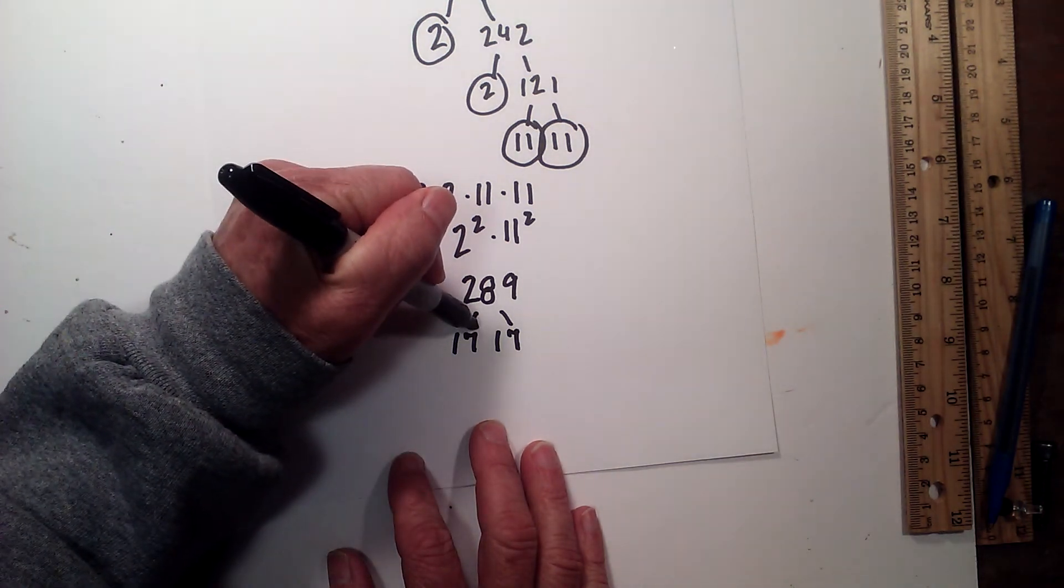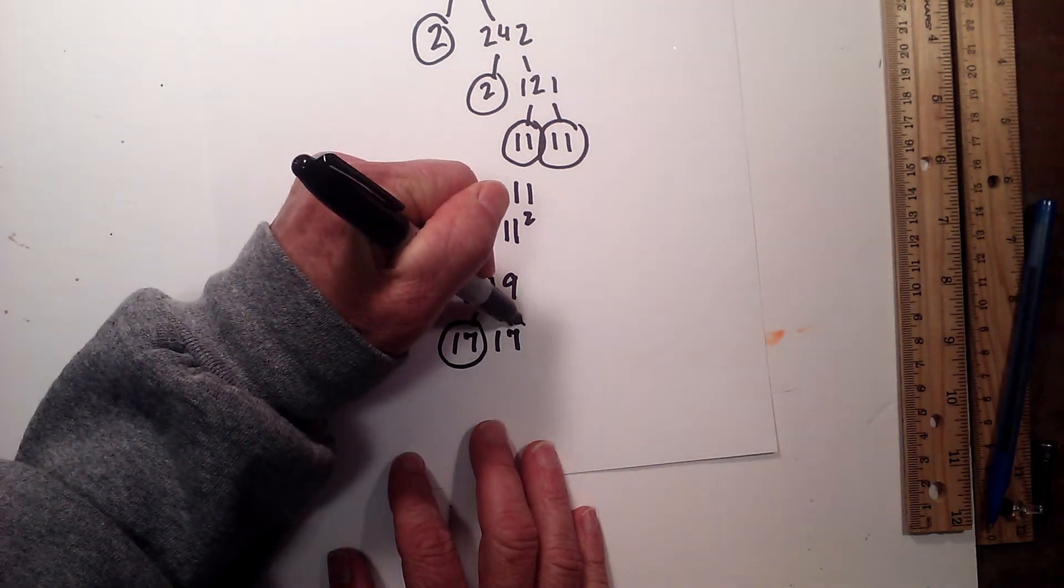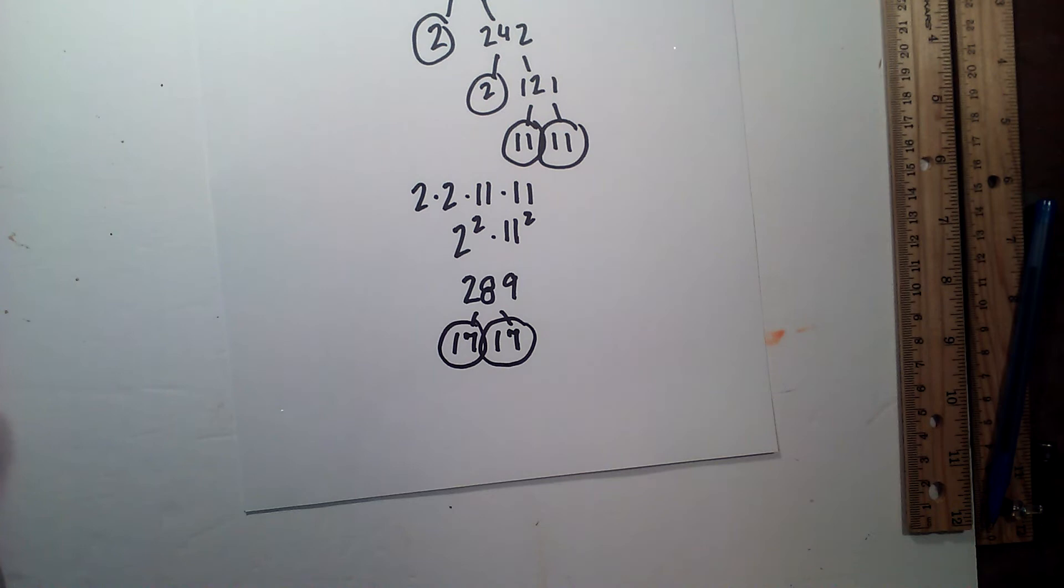So there we go, the prime factorization of 484 and 289. Thanks for watching. MumuMath uploads a new math and science video every day. Please subscribe and share.